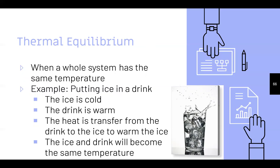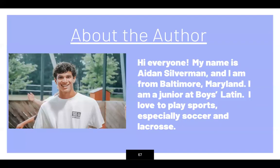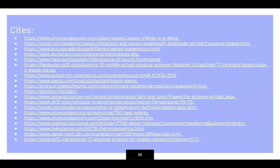A little bit about myself: my name is Aiden Silverman, I live in Baltimore, Maryland. I'm a junior at Boys' Latin. I love to play sports, especially soccer and lacrosse. The sites I used are on this slide if you want to take an extra look and enhance your learning. Thank you.